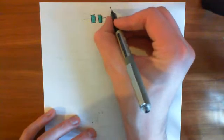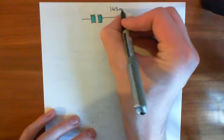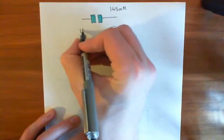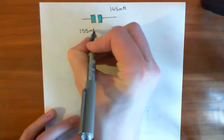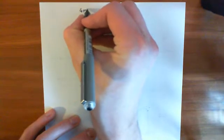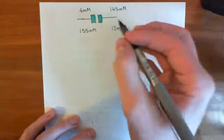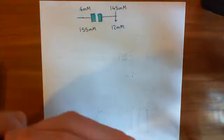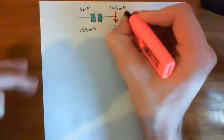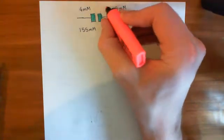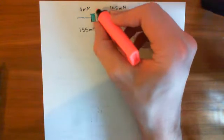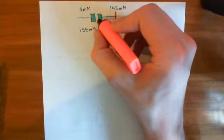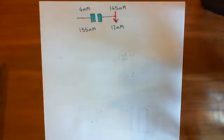The sodium concentration extracellularly is around 145 mM, and intracellularly around 12 mM. The potassium concentration intracellularly is around 155 mM, and extracellularly around 4 mM. This means you have a sodium gradient favouring sodium moving inward — there's a 12-fold gradient, so a sodium ion hitting the channel from the extracellular side is 12 times more likely to go in than out, giving a net movement of sodium inward.